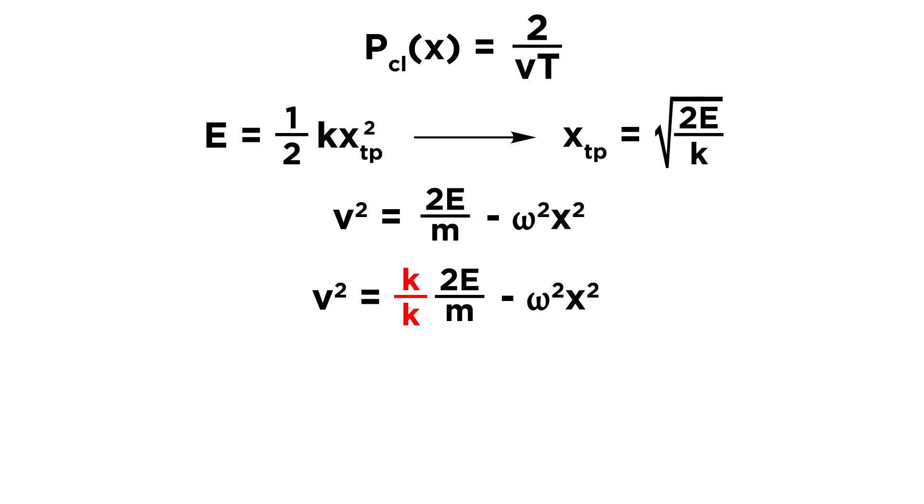To manipulate further, let's multiply this first term by k over k so we aren't changing its value. Now with a k over m in this term, we can replace that with an omega squared as well. And since we know that root 2e over k equals xtp, then 2e over k can be replaced by xtp squared. Then finally we can factor omega squared out of this difference. Remember that this whole time we had been solving for v squared, so let's now just take the square root, and v will be equal to omega times root xtp squared minus x squared.